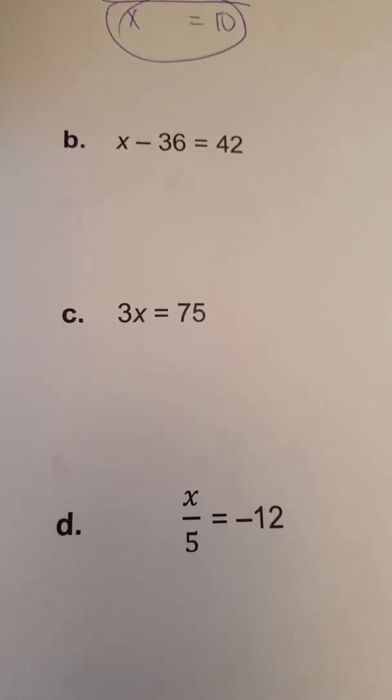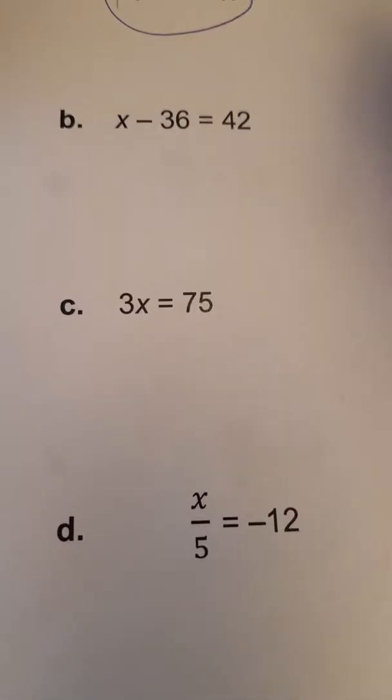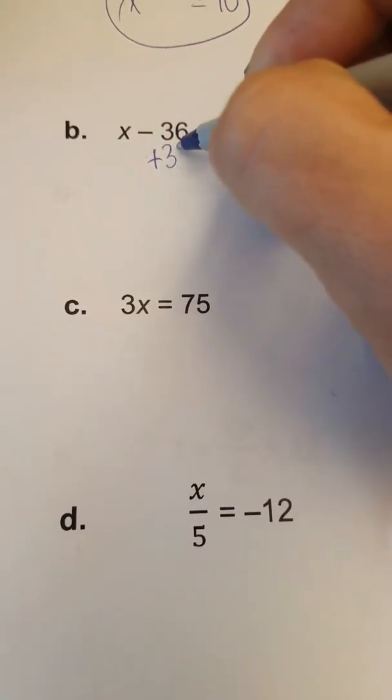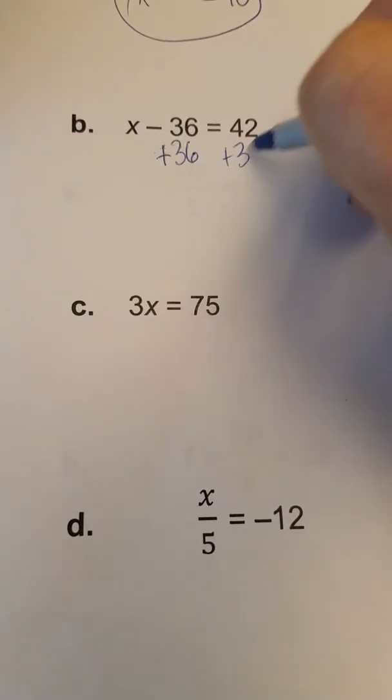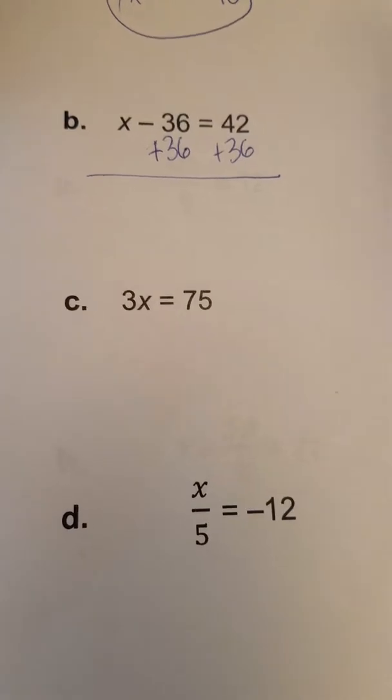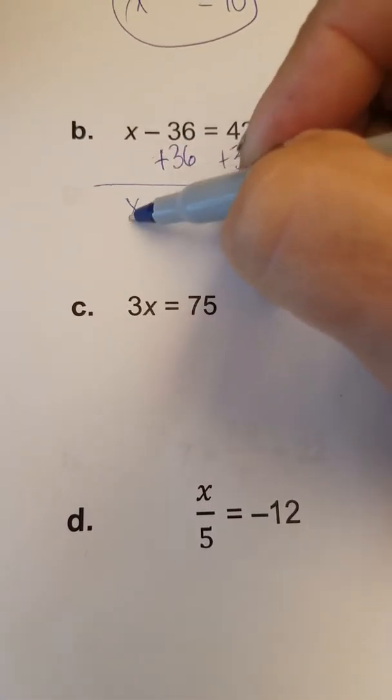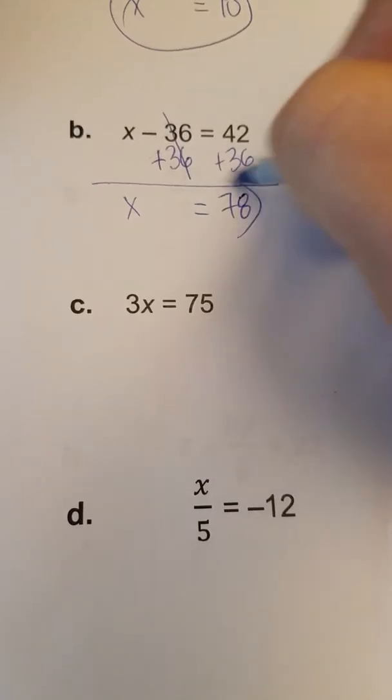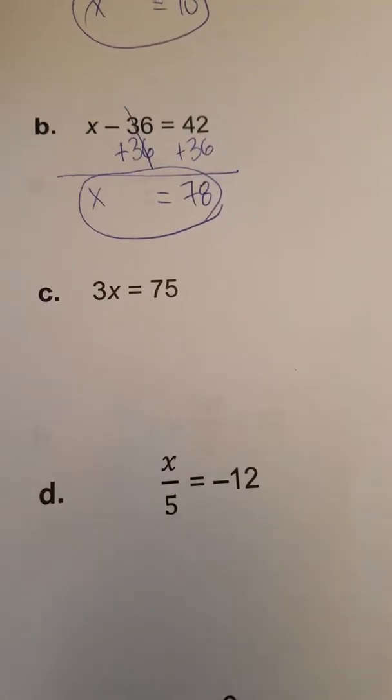For the next example, x minus 36 equals 42. 36 is being subtracted from the variable, so to undo that subtraction, we need to add 36 to both sides of the equation. We bring down the x, the 36s cancel, equals 78. So x equals 78 is our solution.